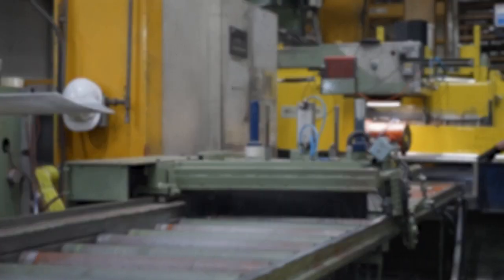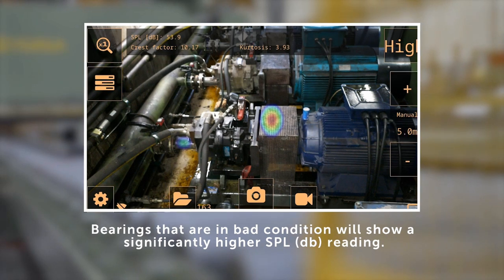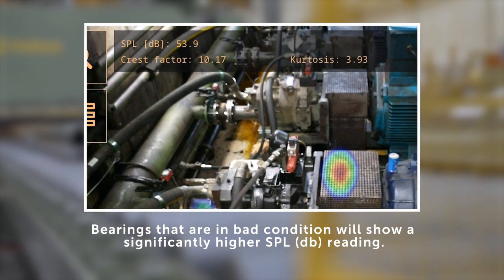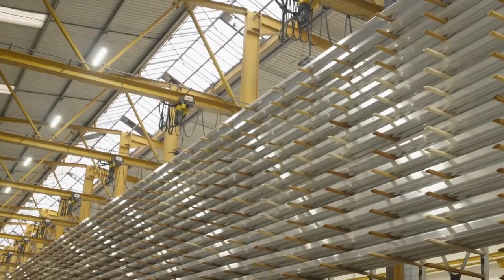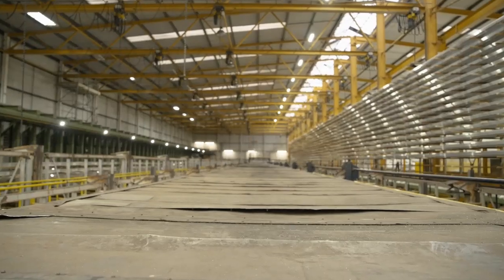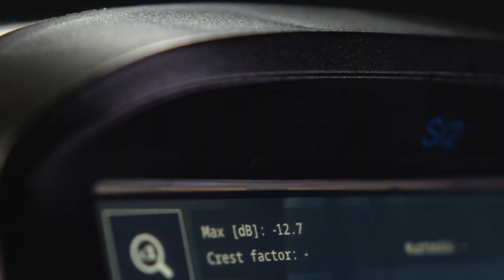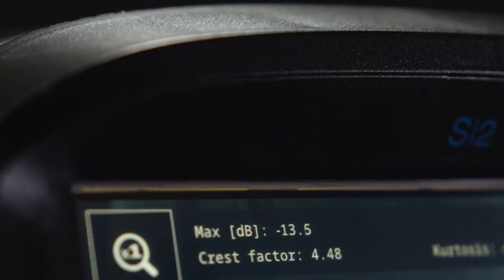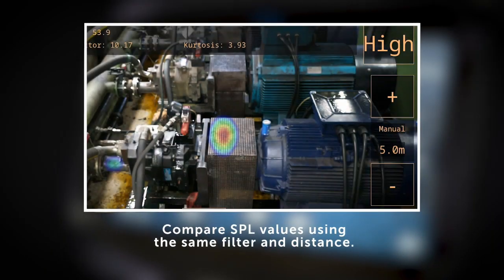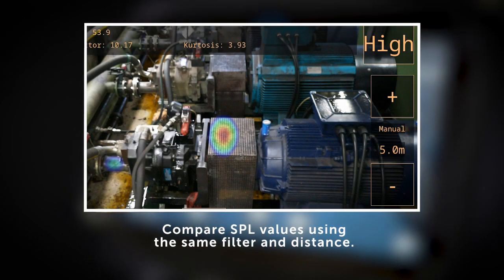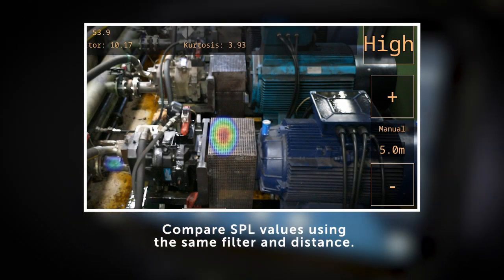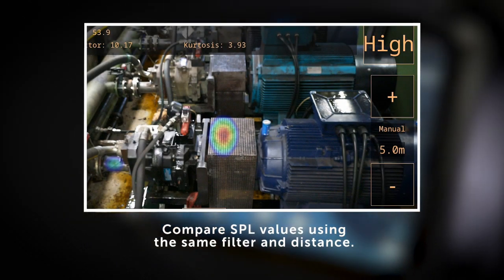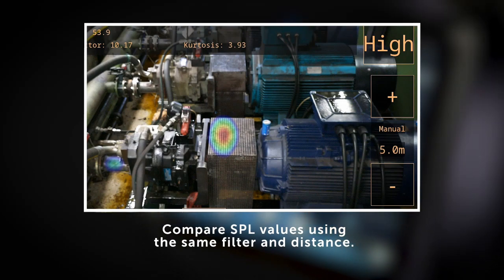The bearings that are in bad condition will show a significantly higher SPL reading than bearings that are in good condition. As the condition gets worse, the SPL reading is likely to increase further. The comparison should be done using the same filter and distance; otherwise, the SPL values cannot be directly compared.